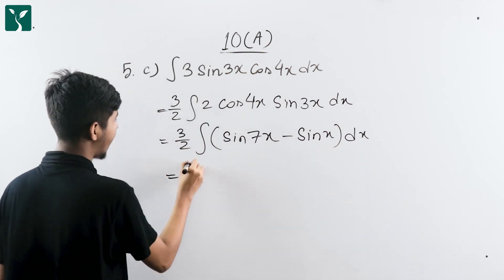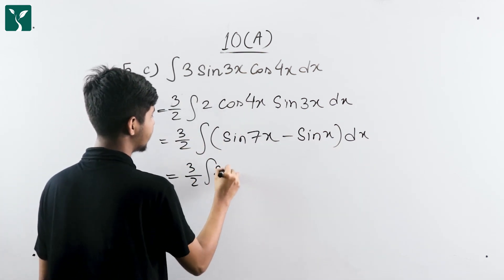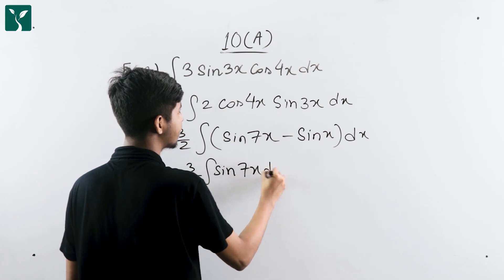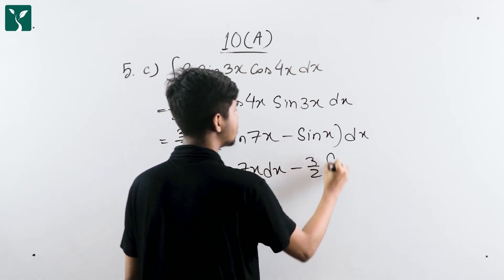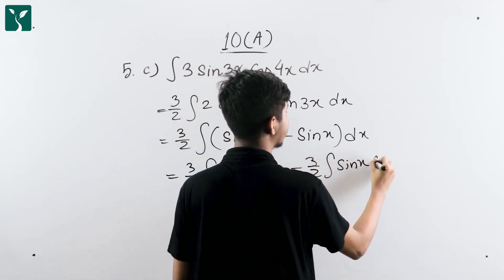This gives us three by two integration of sin 7x dx minus three by two integration of sin x dx.